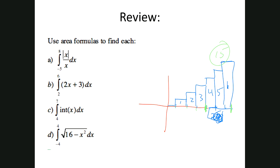Tiebreaker, letter D. What is the integral from negative 4 to 4 of the square root of 16 minus x squared? I think I can do this one. I just noticed that this is a semicircle - the radius is 4. I am taking half of a circle, so it's pi r squared divided by 2. My radius is 4, so that's going to be 16 pi over 2, which is 8 pi. I guess it's a draw.